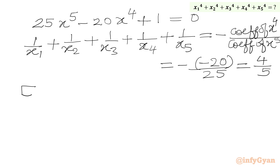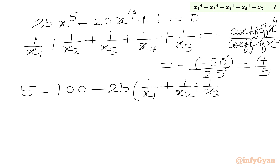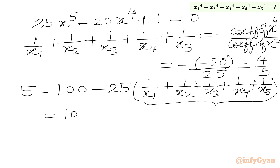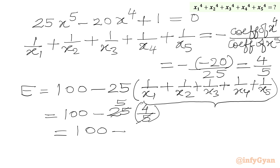So our required value is E equal to 100 minus 25 times 1 over x1 plus 1 over x2 plus 1 over x3 plus 1 over x4 plus 1 over x5. Now we plug in 4 over 5, giving us 100 minus 25 times 4 over 5, which equals 100 minus 20. So we get our final answer E equal to 80.